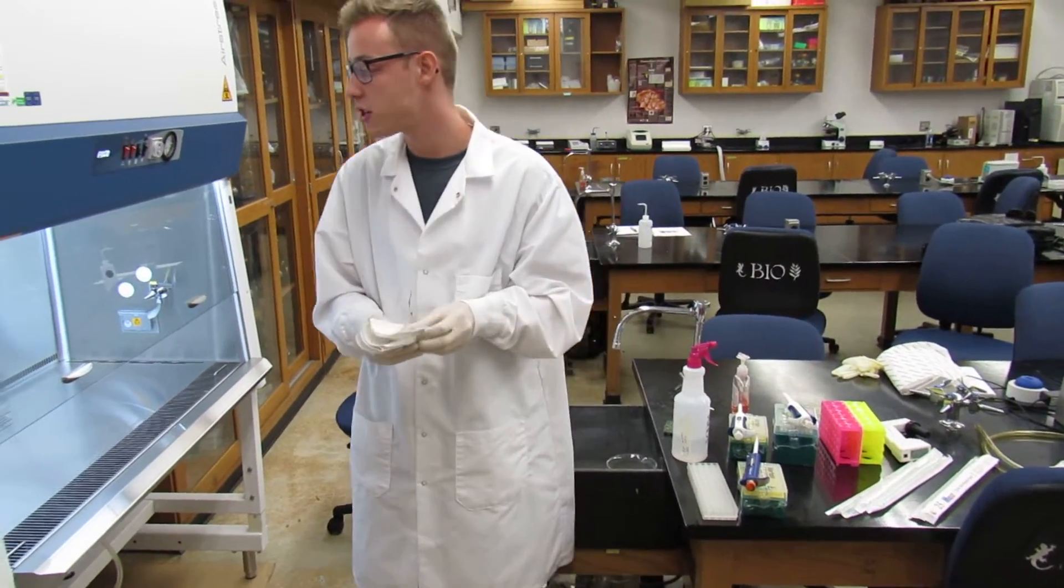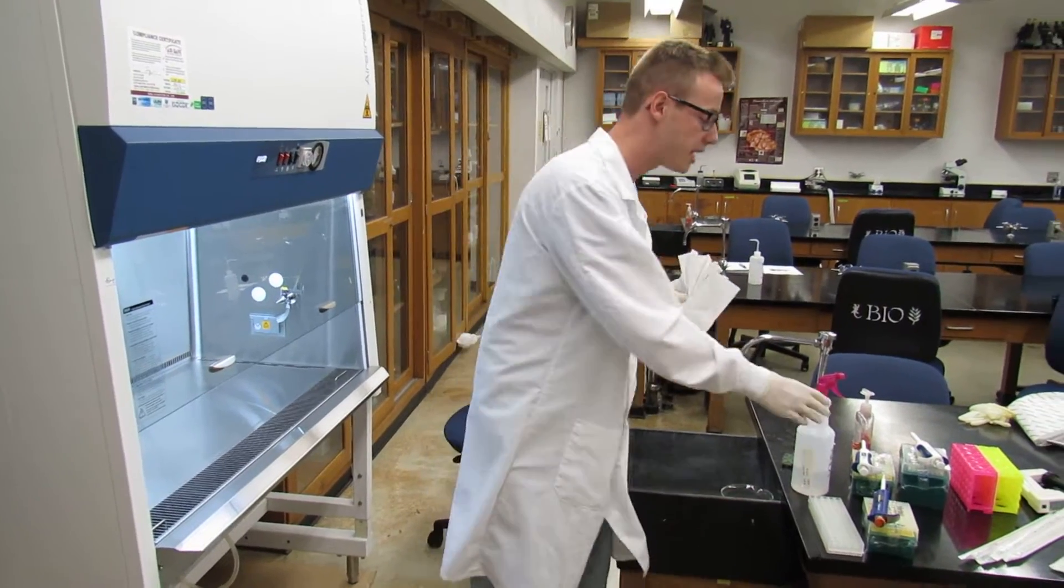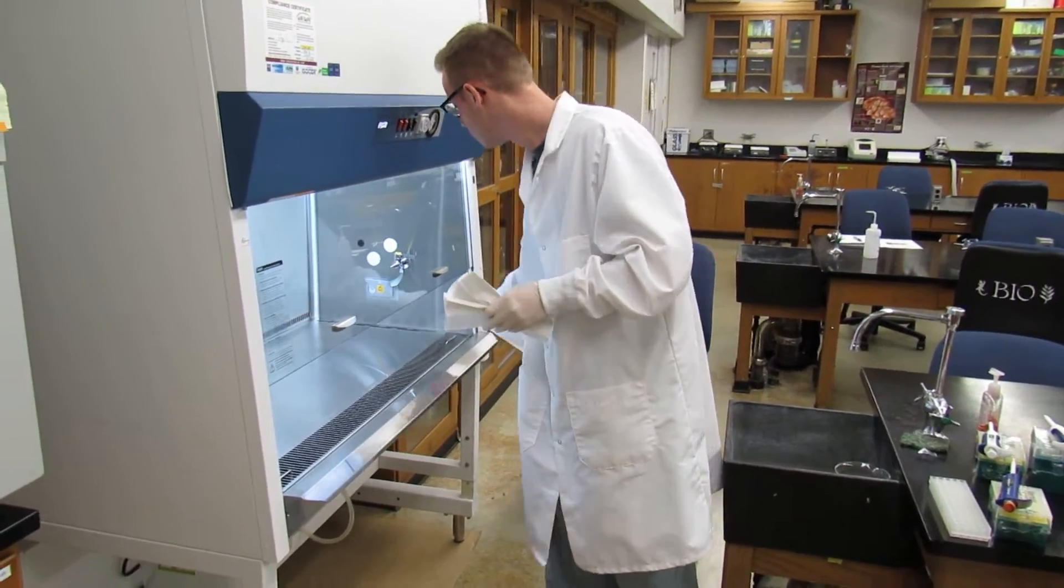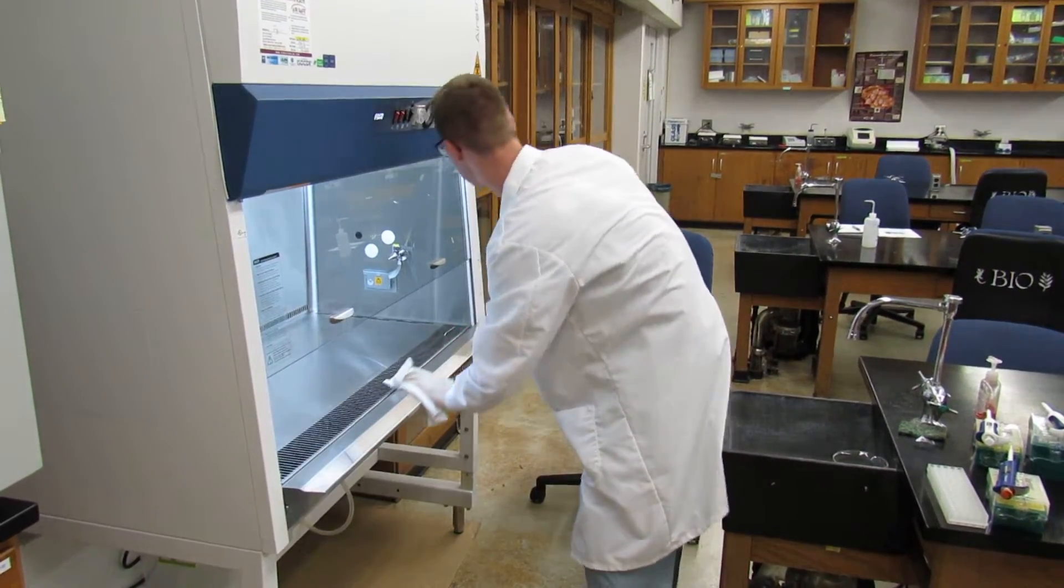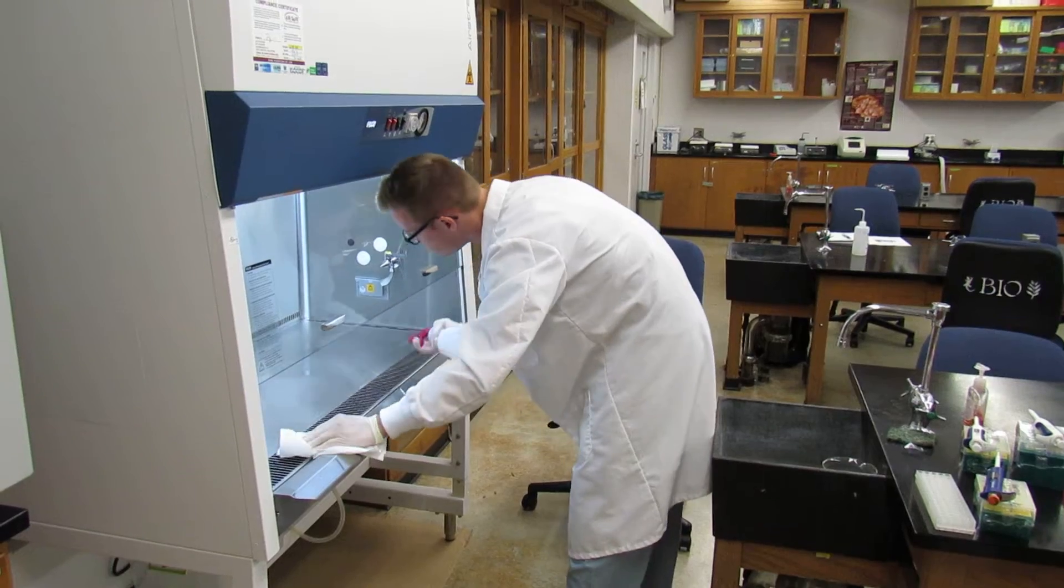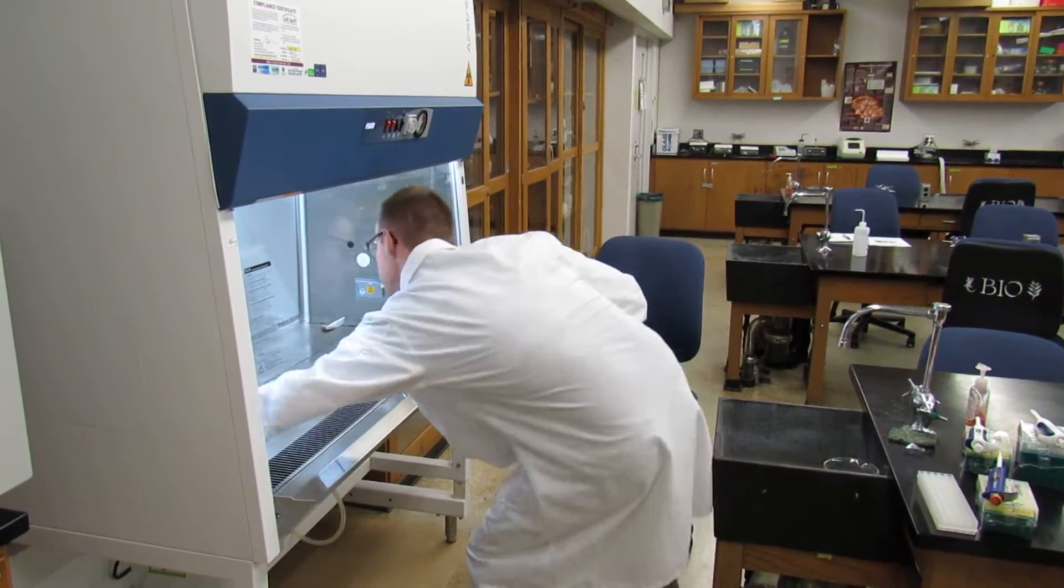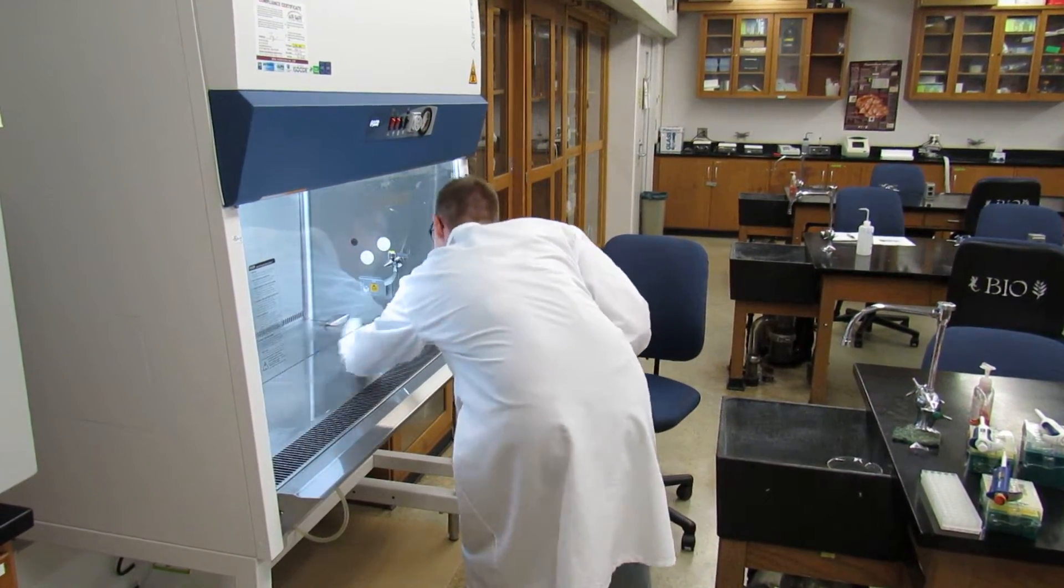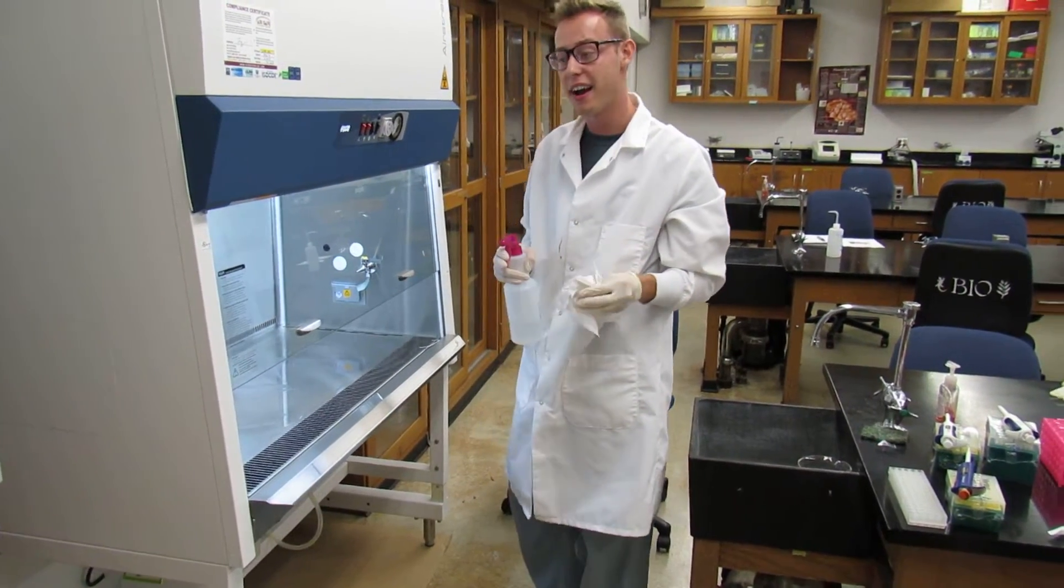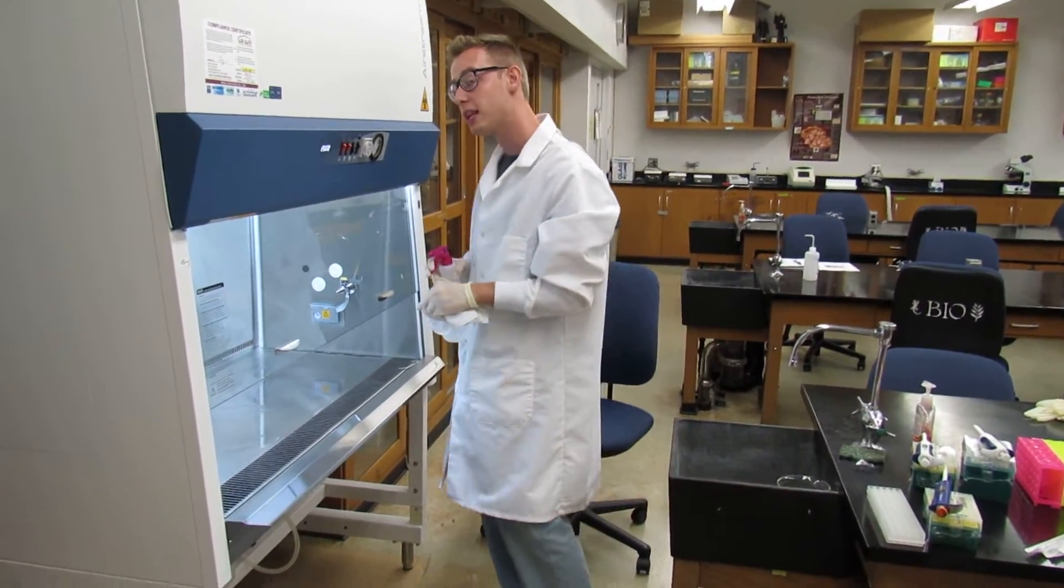After the blowers have turned on, you're going to want to spray the inside of the cabinet with 70% ethanol to make sure the area is sanitized properly. Make sure to spray the entire area of the cabinet, including the sides of the wall.